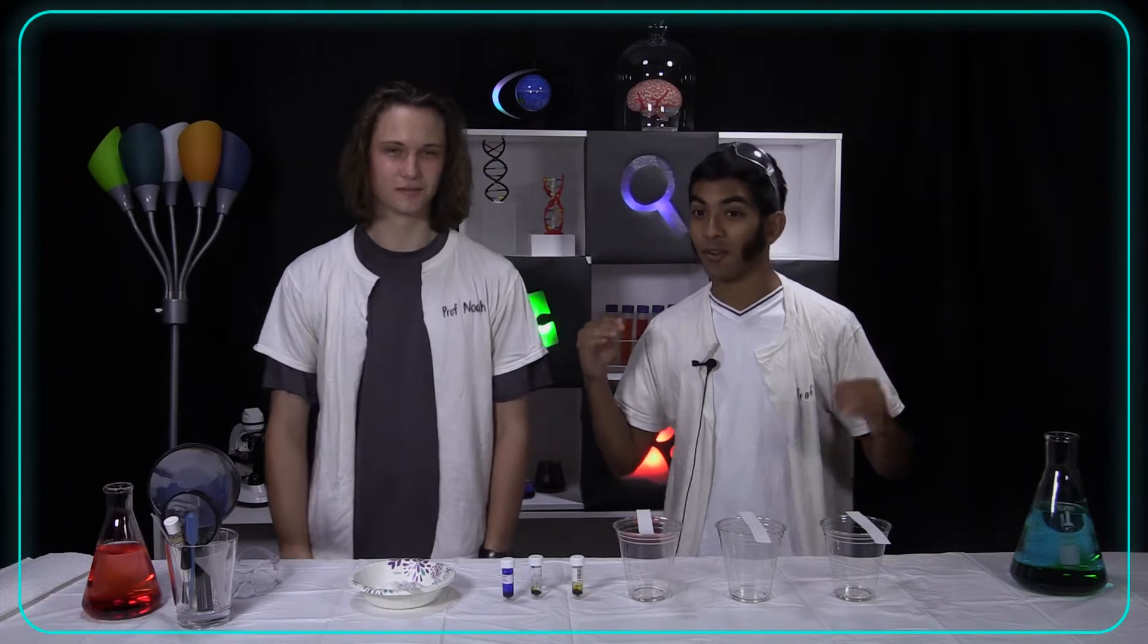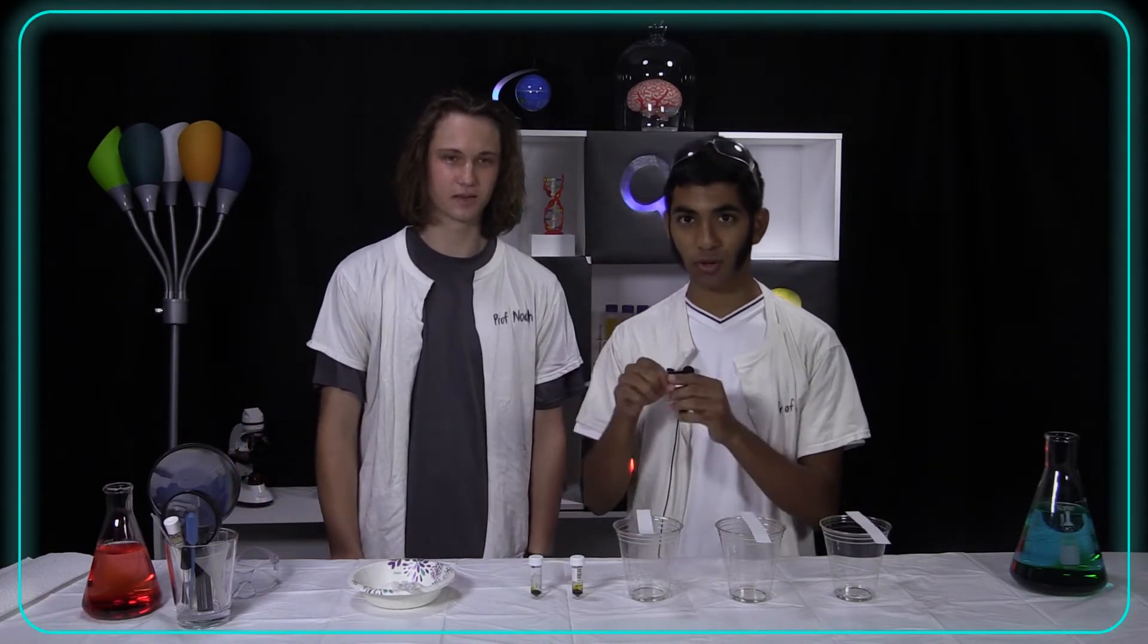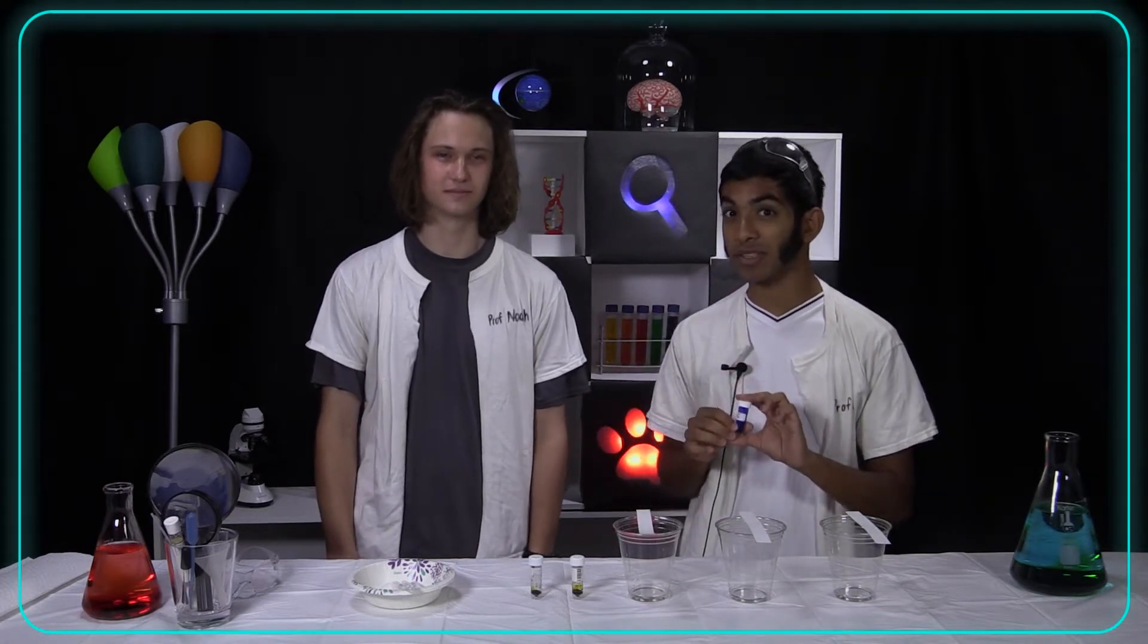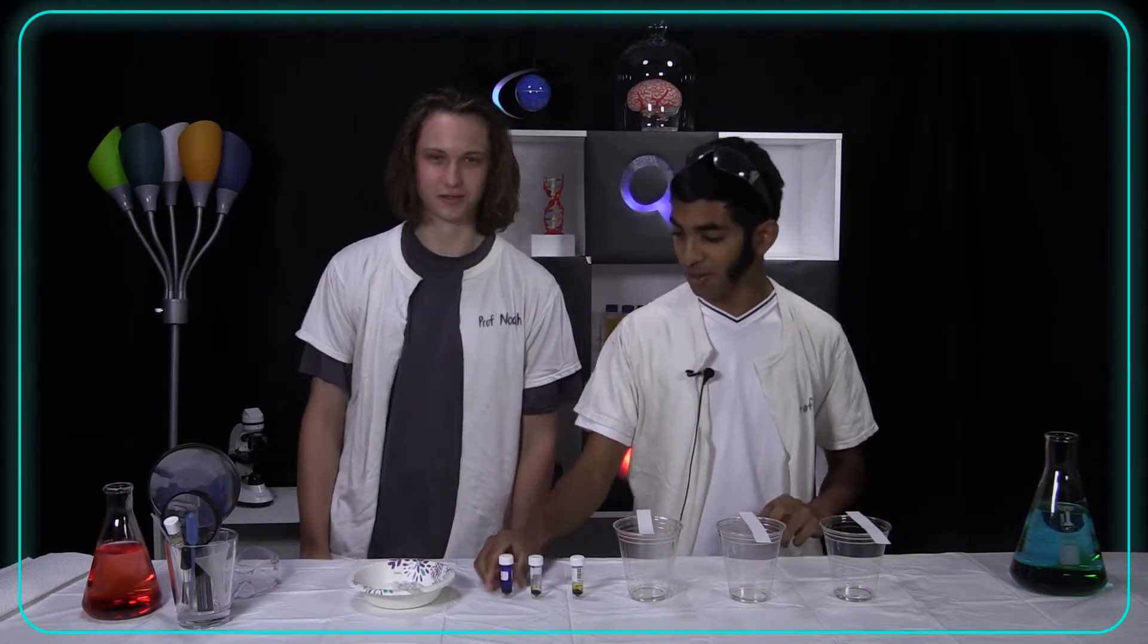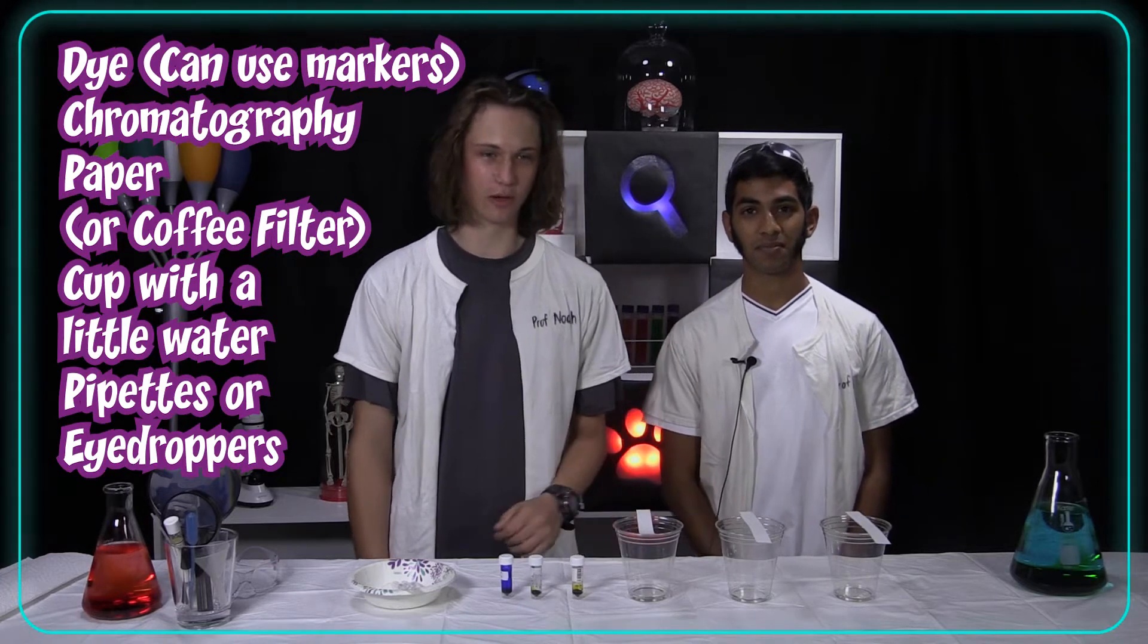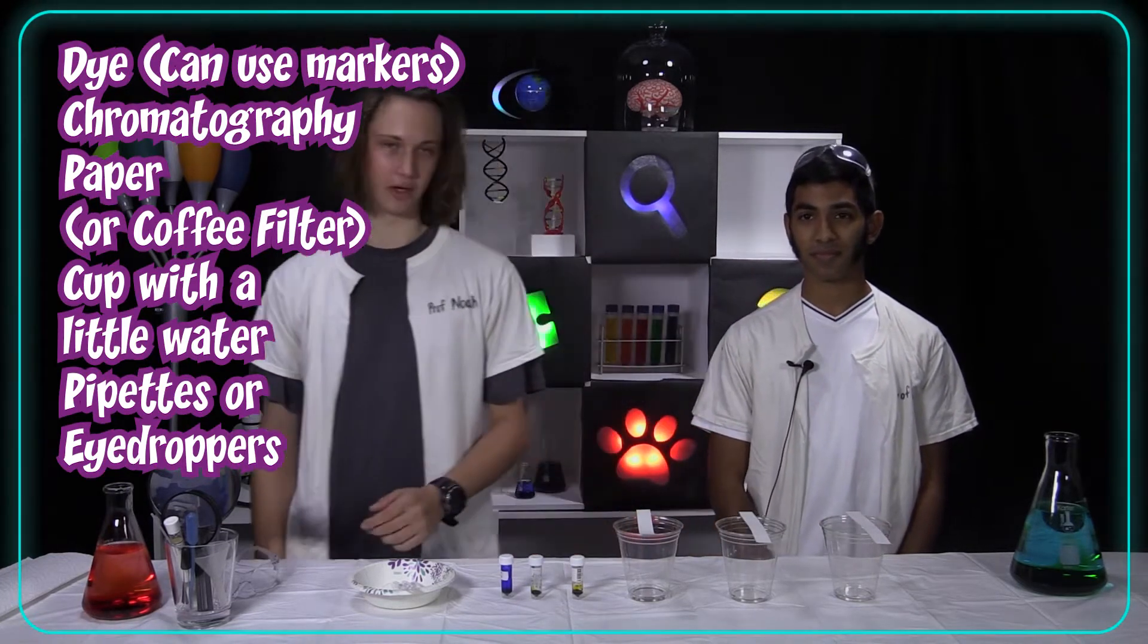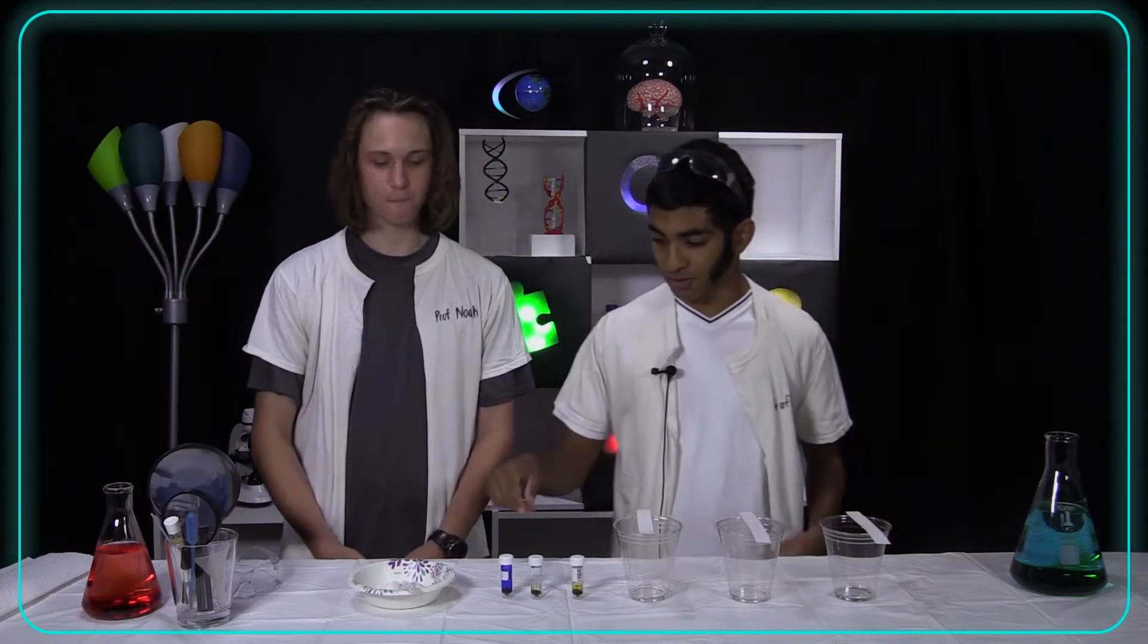All right let's get experimenting. For this experiment we are going to take some inks and we're going to split them up into their dye components. You may not know what that means but I promise when you see it you're going to like it. So for this experiment we're obviously going to need some dye and we're going to have this chromatography paper and you'll get one of those in your packet. A cup with a little bit of water and some like pipettes or eyedroppers something like that. All right let's get started.